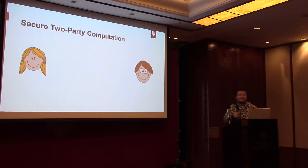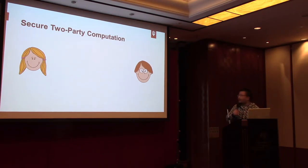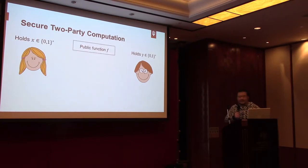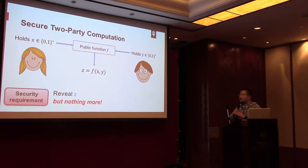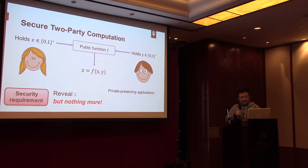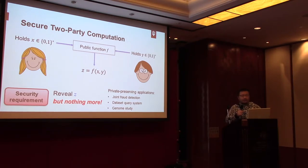First, let me briefly introduce what secure computation is. There are two parties, a sender and a receiver. They have secret inputs X and Y, and a public function F. They want to evaluate the function on the secret inputs X and Y, and learn nothing but the output. The secure computation protocol has many useful applications, such as private set intersection, fraud detection between banks, and private query systems for genome studies.